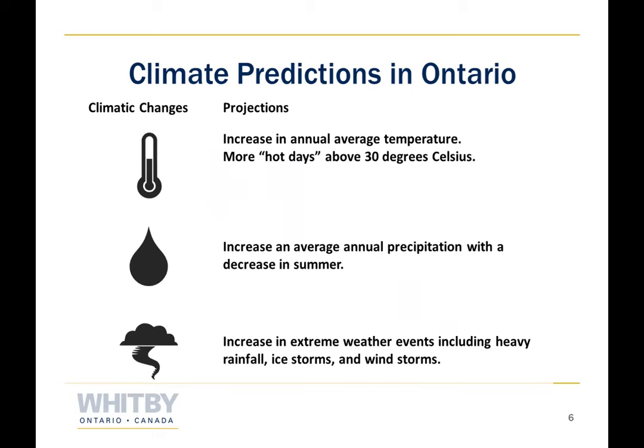With all these greenhouse gas emissions being released, what does that mean for Ontario? Climate projections all show the same thing: Ontario is going to get warmer, wetter, and wilder. We are going to see more hot degree days — more days above 30 degrees Celsius by 2050, which is only 30 years away. We're going to see an increase in average annual precipitation but a decrease in summer rainfall, meaning more intense rainfall and snowfall followed by patterns of dryness. We also anticipate an increase in extreme weather events such as heavy rainfall, ice storms, and wind storms.